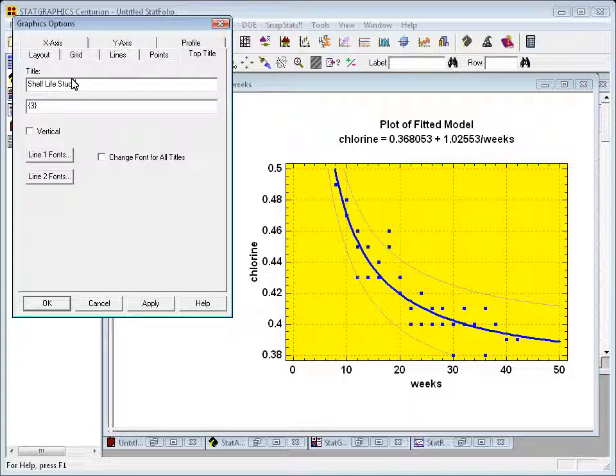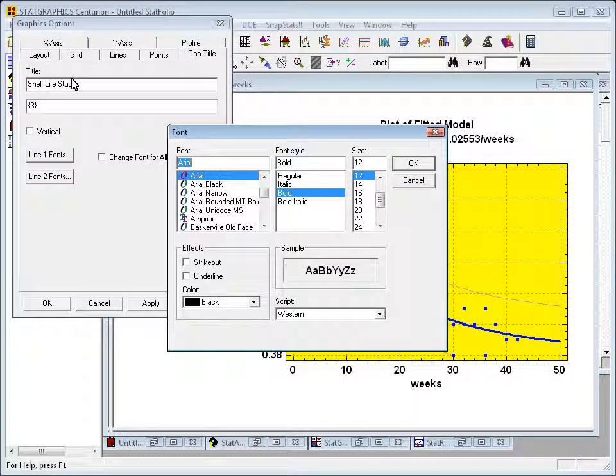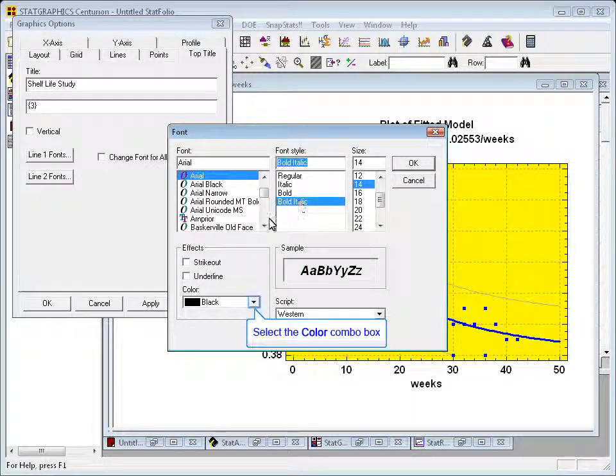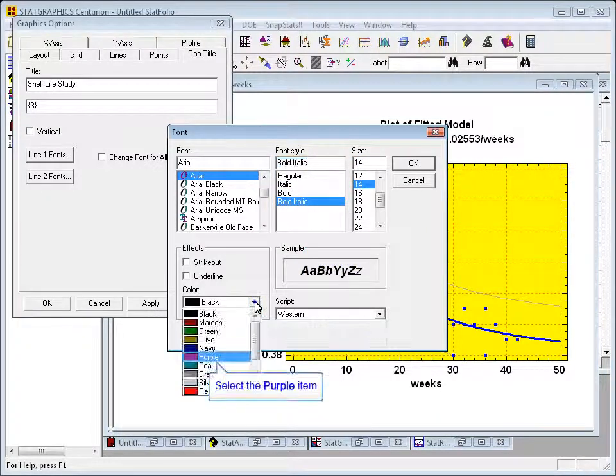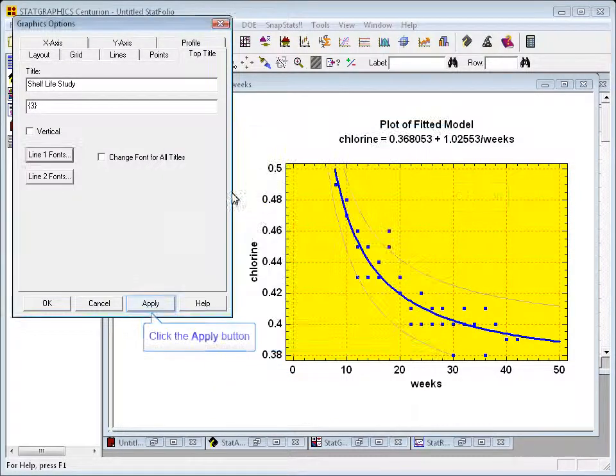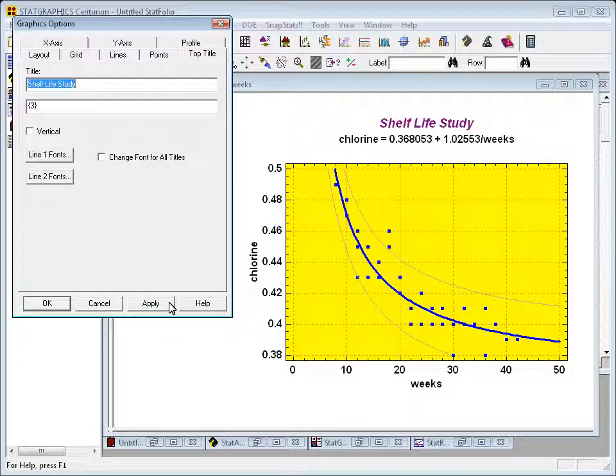I think I'll also press the button labeled line one fonts. This will let me do things like change the size of the title. I think I'll make it size 14. Perhaps I'll also make it bold italic. And down here where it says color, I think I'll choose a purple title. I'll then press OK, apply, and you can see it's changed that top title.